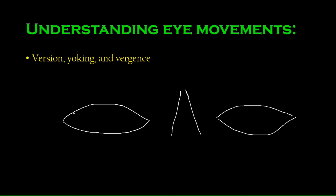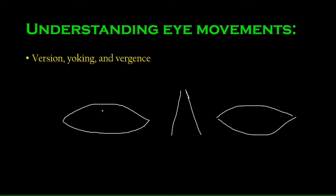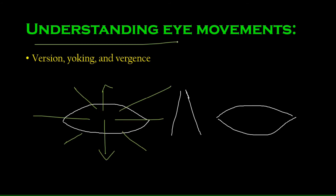There are also combination movements — for example, looking up and to the right requires the combination of muscles moving it laterally and upward. In this way the eye can move in many directions. There is one other movement called torsion, which includes extorsion and intorsion, and that is a bit more complicated — we will study that shortly.